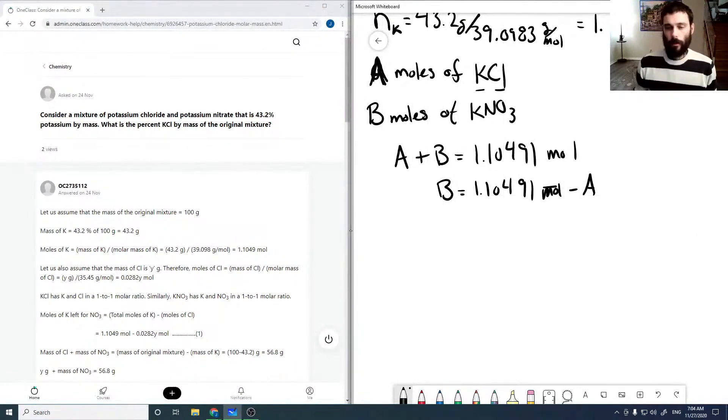And now looking at our total expression, right? So if we have A moles of KCl, oops, if we have A moles of KCl then that means that A times our molar mass of KCl plus B times our molar mass of KNO3 is equal to our total mass, which in this case we're taking as 100 grams.